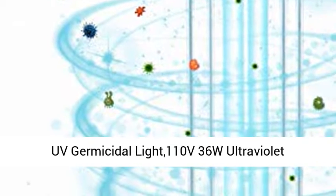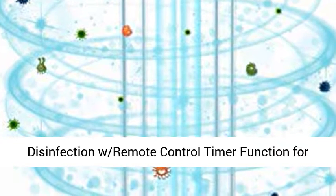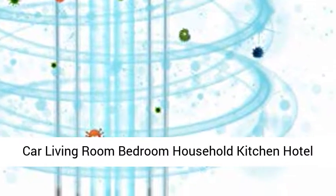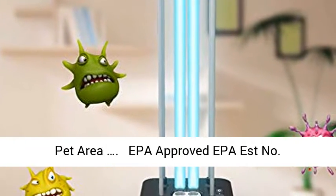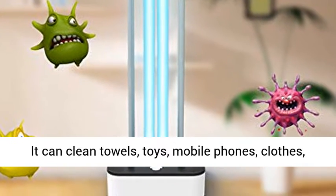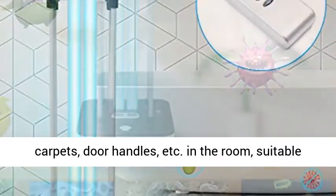UV Germicidal Light 110V 36W Ultraviolet Germicidal UV Quartz Lamp Sterilization Disinfection with Remote Control Timer Function for Car, Living Room, Bedroom, Household, Kitchen, Hotel, Pet Area. EPA Approved EPA's No. 97861 CHN1. Safe and convenient, covers 485 square feet.